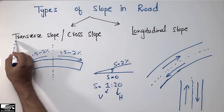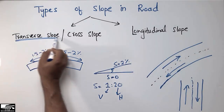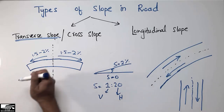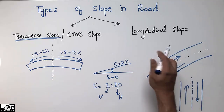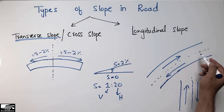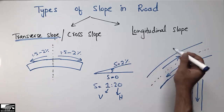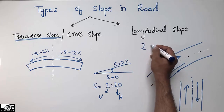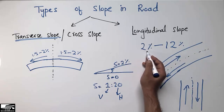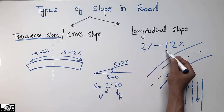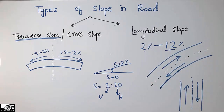To summarize: the slope provided in the transverse or cross direction — not along the length of the road — is the transverse slope, while the slope provided along the length of the road is called the longitudinal slope. The longitudinal slope ranges from 2 percent to 12 percent, where 2 percent is the minimum and 12 percent is the maximum.